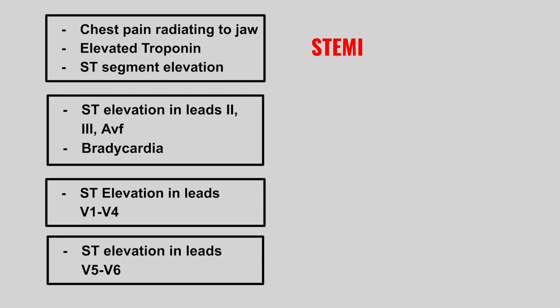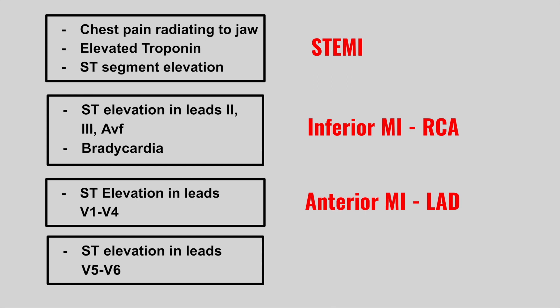ST elevations in leads II, III, and aVF — the inferior leads — with associated bradycardia: this is an inferior MI affecting the right coronary artery. ST elevations in leads V1 to V4: this is an anterior MI affecting the LAD. ST elevations in leads V5 to V6: this is a lateral MI affecting the left circumflex.